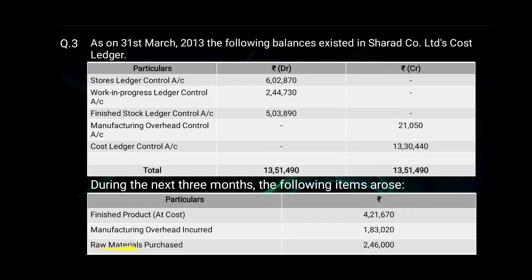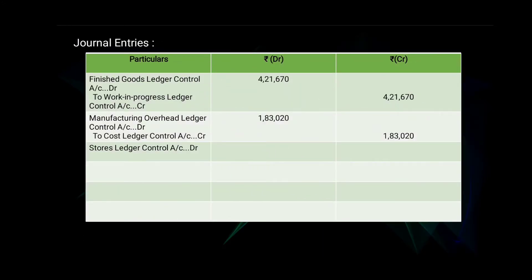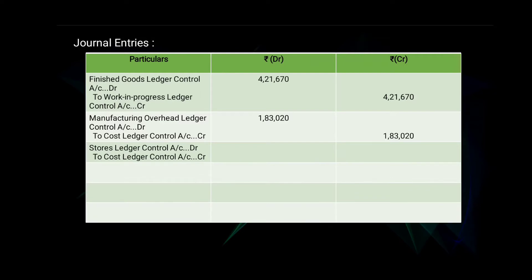Next, raw materials purchased; the amount is 2 lakh 46,000. The journal entry will be: Stores Ledger Control Account debit, to Cost Ledger Control Account — amount 2 lakh 46,000 on the debit and on the credit side.